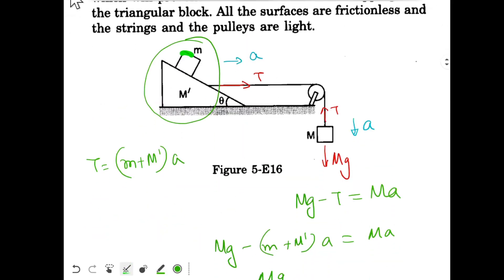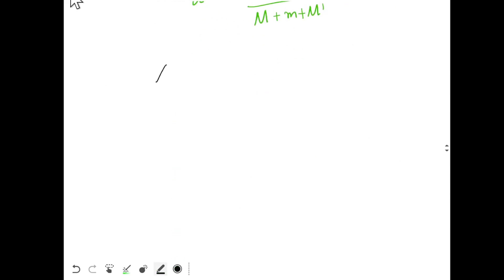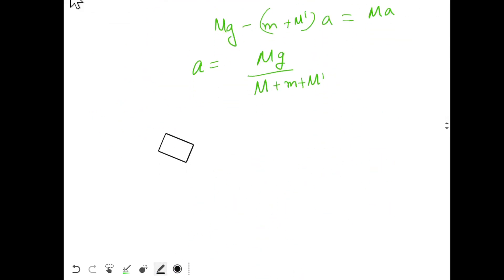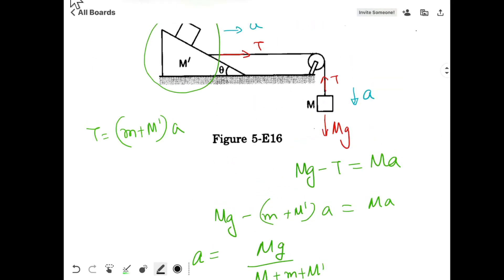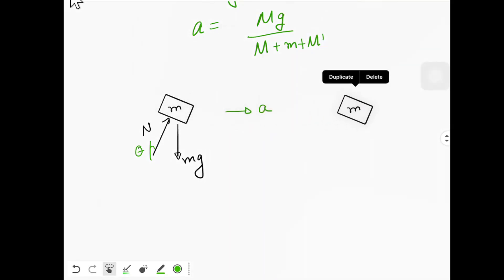Now look at just this block — this block is not sliding on the wedge. The block is moving with the wedge with the same acceleration a. So let's draw the FBD of the block again. The block has mass small m, and the forces acting on it are: normal force acting on the block, and downwards we have mg. Since the wedge makes angle theta with the horizontal, the normal force will make angle theta with the vertical, and the block has horizontal acceleration a.